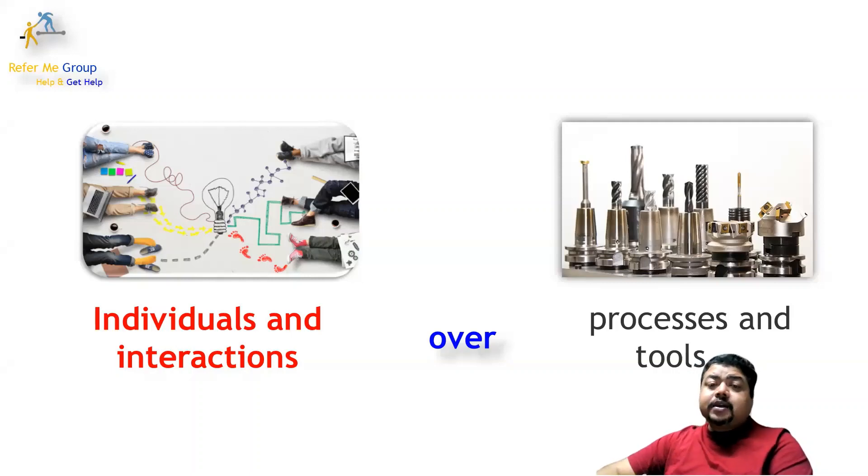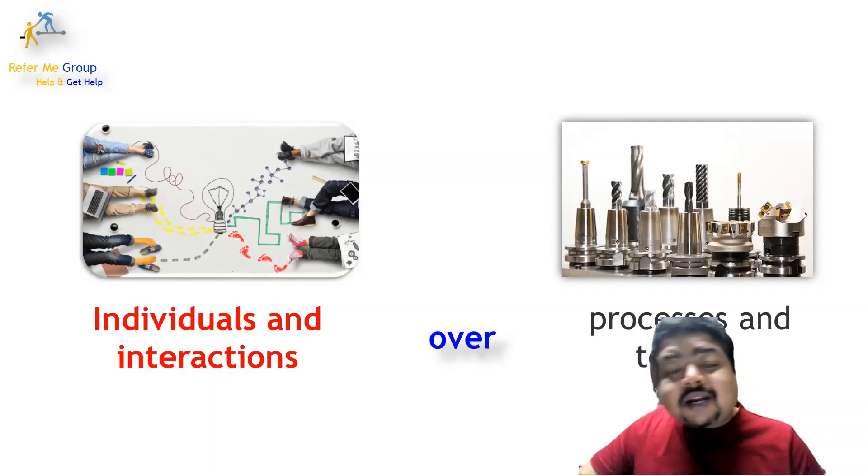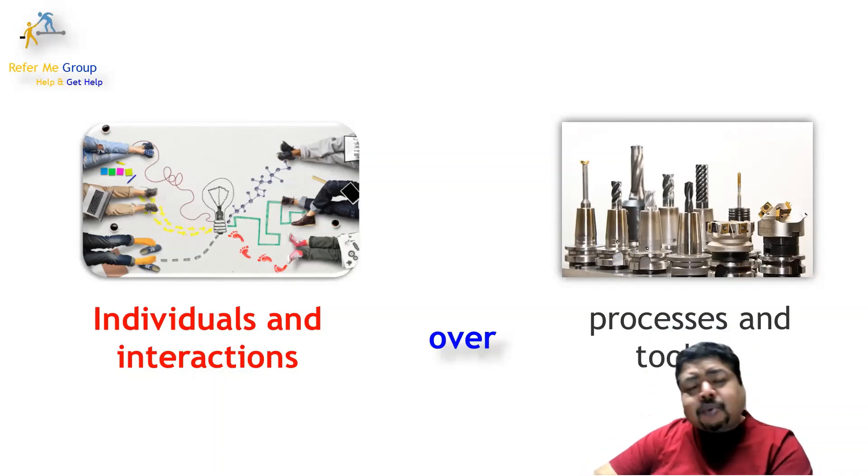The first is here on my screen: individuals and interactions over processes and tools. Why is this important? Individual interaction is very important. Agile always prefers to do the interaction, to talk with people. In Agile, people matter. Relying on processes and tools is important to an extent—we cannot ignore that—but Agile is more about people where they matter.